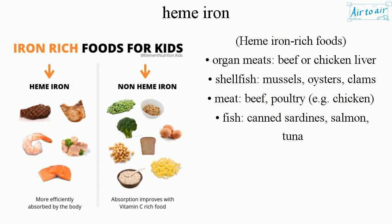Heme iron-rich foods: organ meats such as beef or chicken liver; shellfish including mussels, oysters, and clams; meat such as beef; poultry, e.g. chicken; and fish including canned sardines, salmon, and tuna.